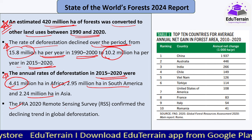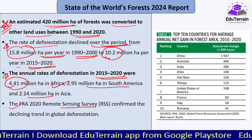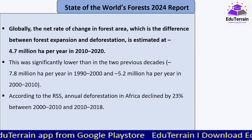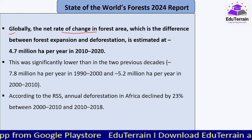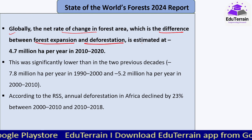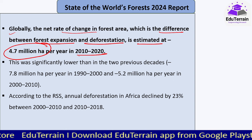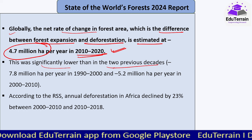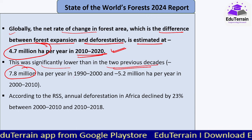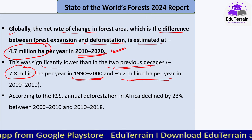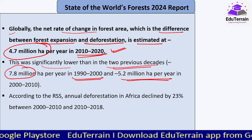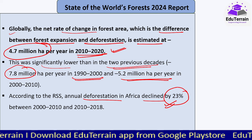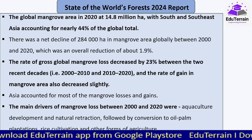The rate of deforestation declined significantly over the period — from 15.8 million hectares per year in 1990-2000 down to 10.2 million hectares per year between 2015-2020. Annual deforestation rates in 2015-20 were highest in Africa at 4.41 million hectares — with more than 90% driven by wood fuel needs — followed by South America at 2.95 million hectares and Asia at 2.24 million hectares. The Forest Resources Assessment 2020 remote sensing survey confirmed the declining trend in global deforestation.